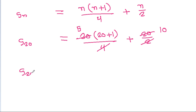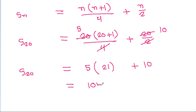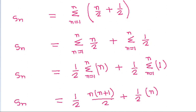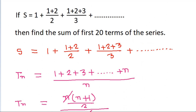So S20 will be equal to 5 times 21 plus 10, which is 105 plus 10, equal to 115.